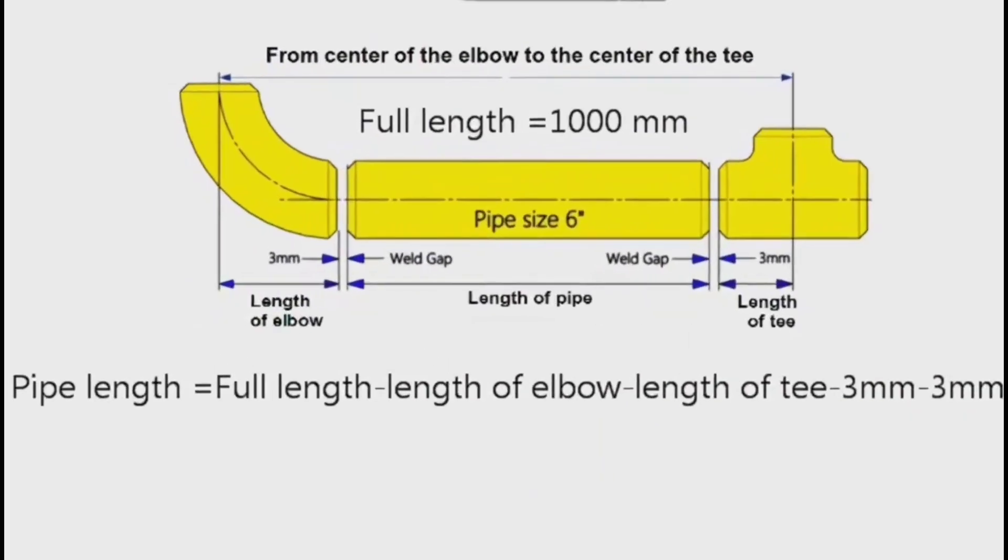Let's do the calculation on numbers. If we take the total length of the pipeline, that is, the distance from the center of the elbow to the center of the tee, 1000mm, then our calculation will be as follows.